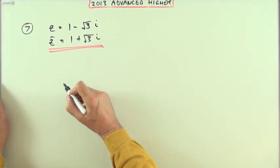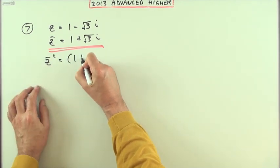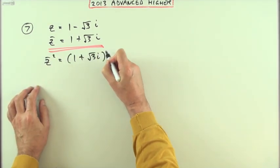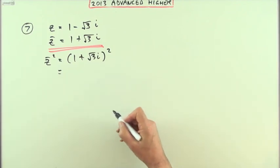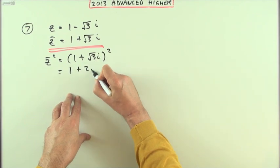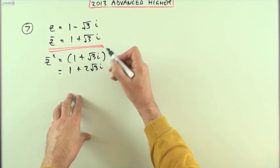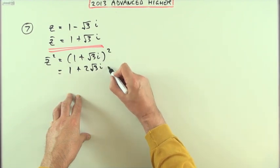Now if I took the rectangular route to this, then I would have gone on to say, well z̄² would be (1 + √3i) squared. And then squaring that bracket would be: square the first, twice the product which would be 2√3i, square the last which would be negative one times three which is negative three.